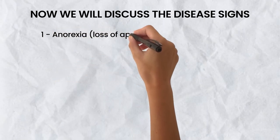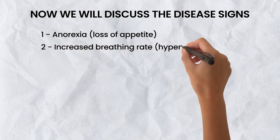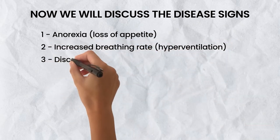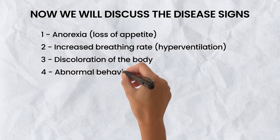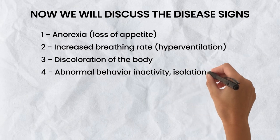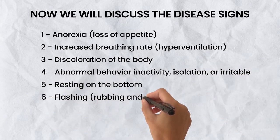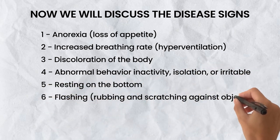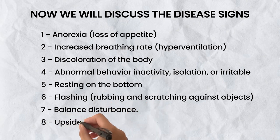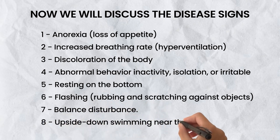The disease signs include: anorexia and loss of appetite, increased breathing rate and hyperventilation, discoloration of the body, abnormal behavior such as inactivity, isolation, or irritably resting on the bottom. Fish may also exhibit flashing — rubbing and scratching against objects — balance disturbance, swimming upside down, or swimming near the surface.